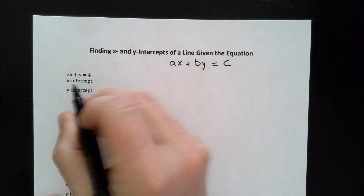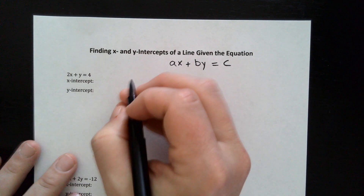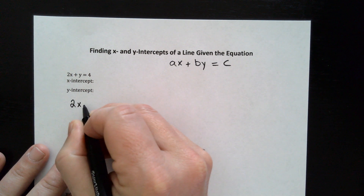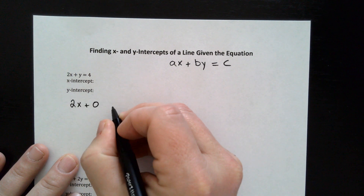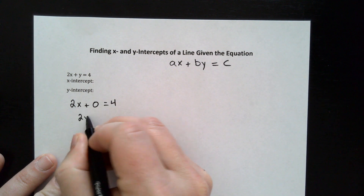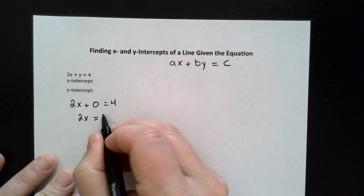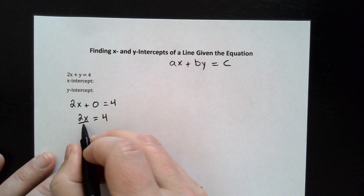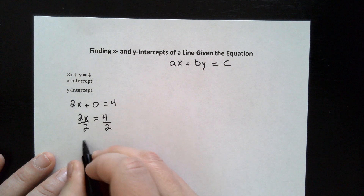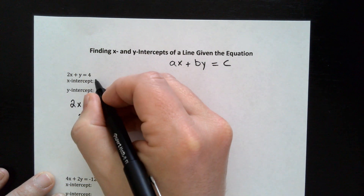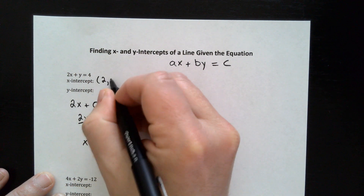Let's look at problem number one. We've got 2x plus y equals four. We'll find the x intercept first by making the y term zero. That term goes away completely, leaving us with 2x equals four. Dividing by two on both sides, we get x is equal to four over two, which is two. So that is the ordered pair two comma zero.